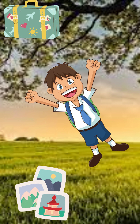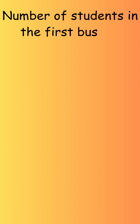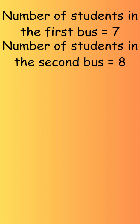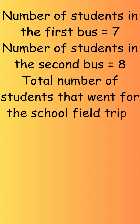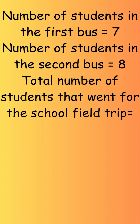Let's make a statement. Number of students in the first bus equals seven. Number of students in the second bus equals eight. Total number of students that went for the field trip is seven plus eight.